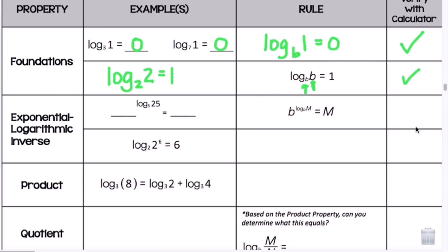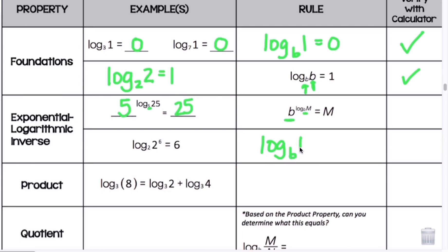Now we have the exponential-logarithmic inverse property. When the base b is raised to a logarithm with the same base, for example 5 raised to log base 5 of 25 equals 25 — whatever that argument m is, that's what it equals. We can also write it as: log base 2 of 2 to the sixth power equals 6. The rule is: log base b of b to the m power equals m.